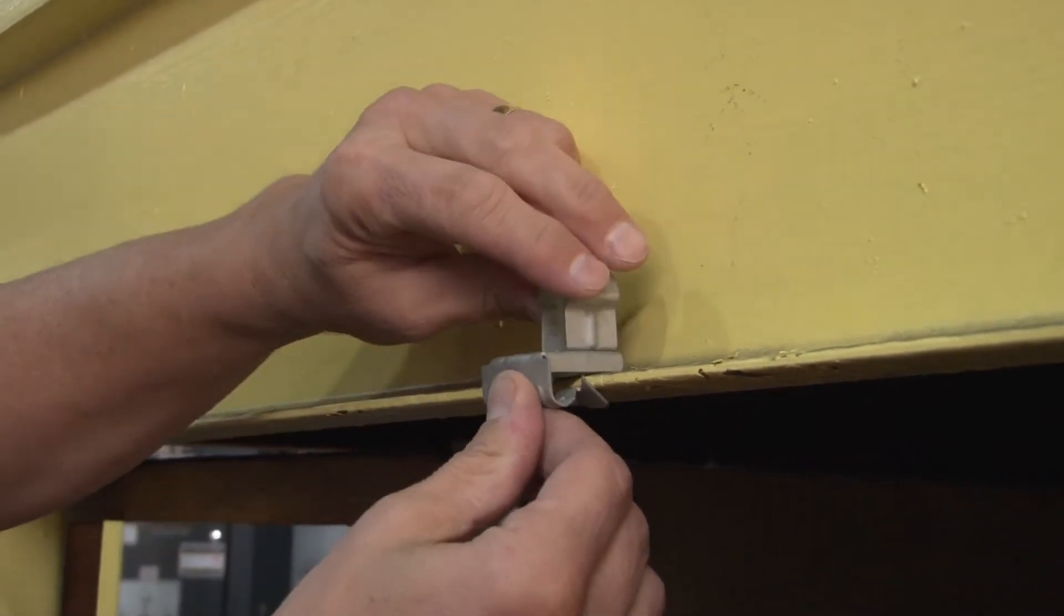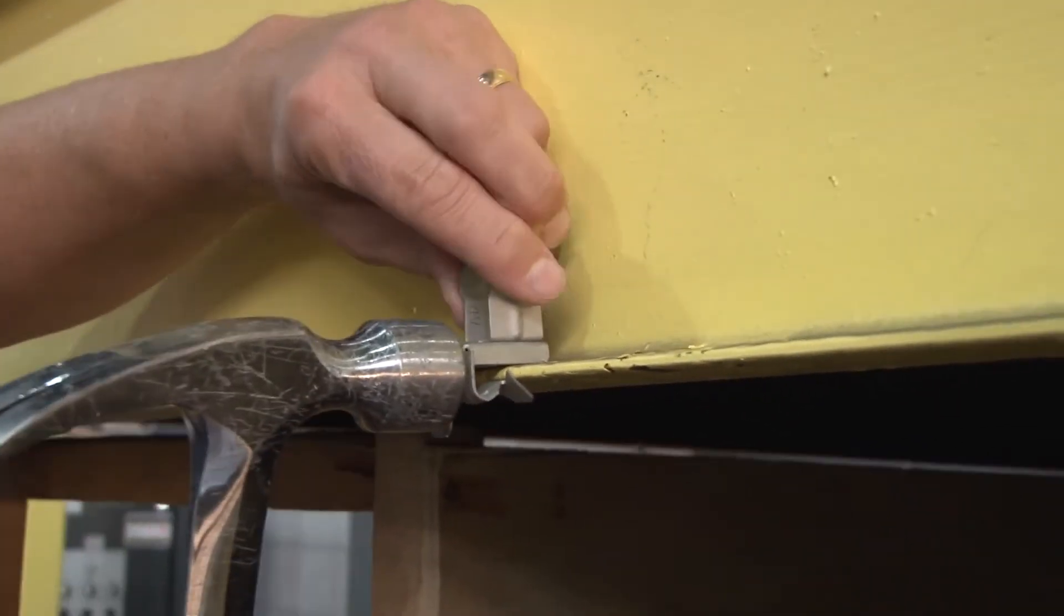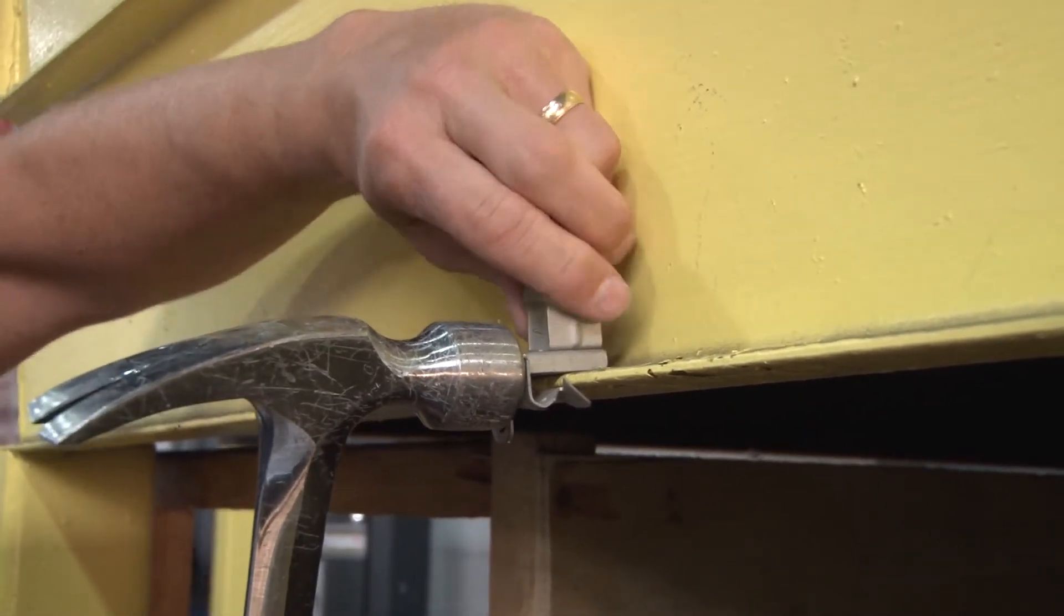You simply hold it in place where you want to install it, grab your hammer, and strike the back of the beam clamp so that the steel tangs bite into the beam surface.